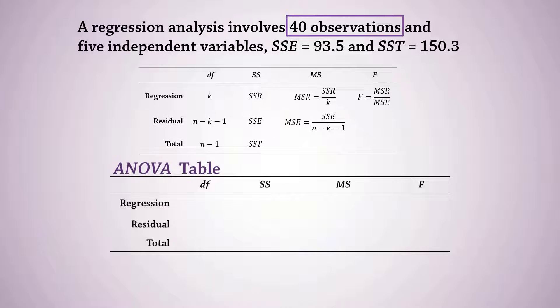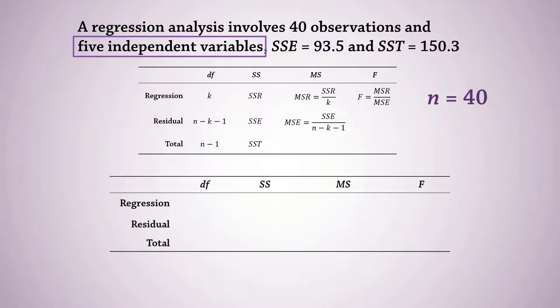First, we have 40 observations, so n equals 40, and 5 independent variables, means k equals 5. So we have df regression k equals 5 here. And for df total, n minus 1 is 40 minus 1, which equals 39. df residual or error will be 39 minus 5, which gives 34.